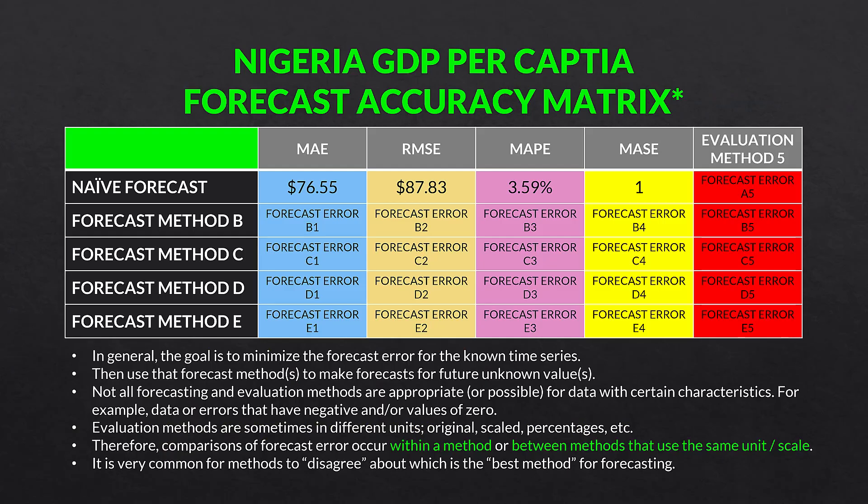Here is our Nigeria GDP per capita forecast accuracy matrix. We can see that because we used the naive forecast, the MASE is one, and it should be. To recap: the goal is to minimize the forecast error for the known time series, then use that forecast method to make forecasts for future unknown values. Not all forecasting and evaluation methods are appropriate for data with certain characteristics — for example, data with negative or zero values. MASE is a good measure because it avoids a lot of that.